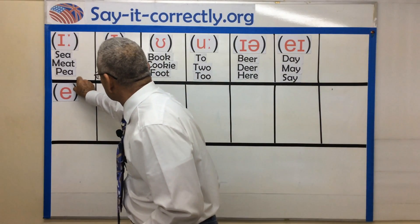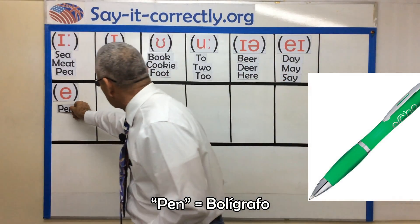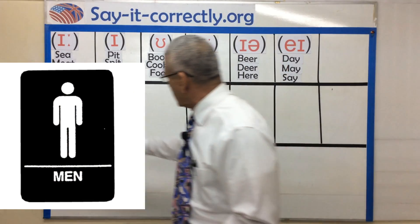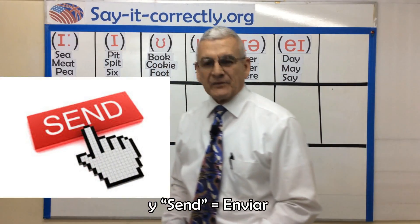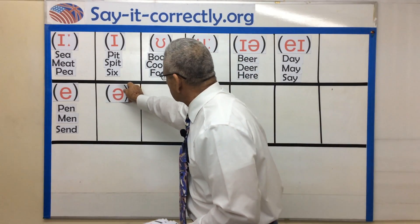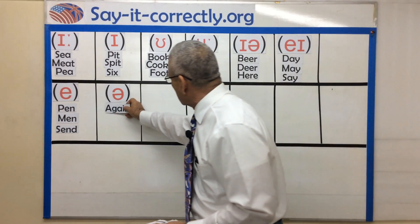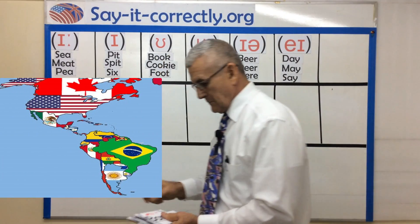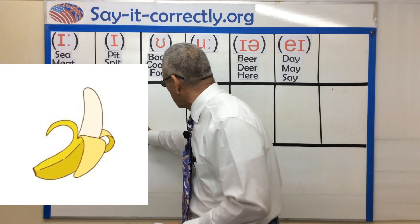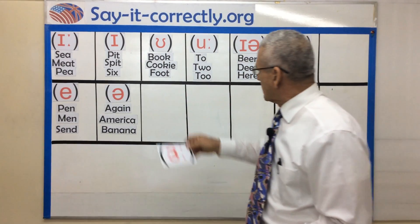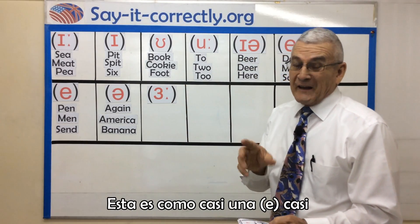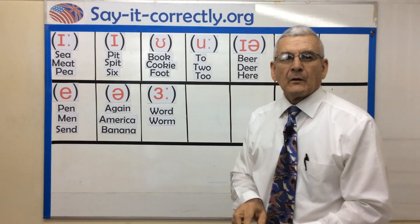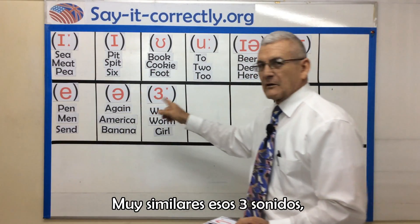Next sound — like in the word pen, men, and send. Next sound, very similar again: America, banana. This next sound is like an E, almost — word, worm, girl. Very similar — those three sounds.